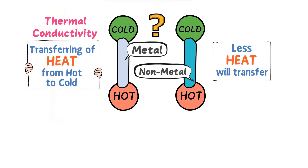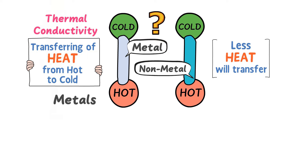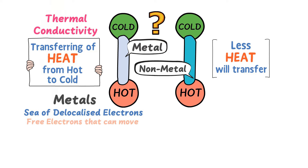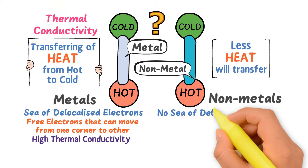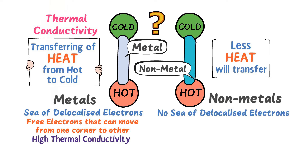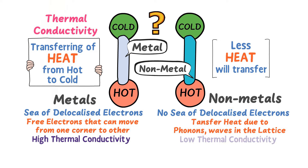The difference in thermal conductivity is simple: within metals there is a sea of delocalized electrons. Delocalized electrons means free electrons that can move from one corner to another corner of the metal, so metals therefore have high thermal conductivity. While non-metals do not have a sea of delocalized electrons, they do pass heat due to phonons, which are waves in the lattice.